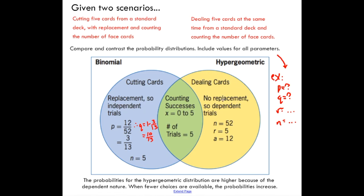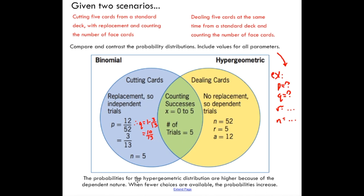With dealing cards, you have no replacement. Dependent trials tells you you have hypergeometric distribution. Okay, in the middle, we have similarities. We're counting successes for both of them. We have the same number of trials for both of them. A little note at the bottom, probabilities for hypergeometric distribution each time get greater and greater because of the dependent nature. So every time that we take a card out, the next card coming has a greater probability than we were looking at a binomial distribution, where the probabilities are equal every time.